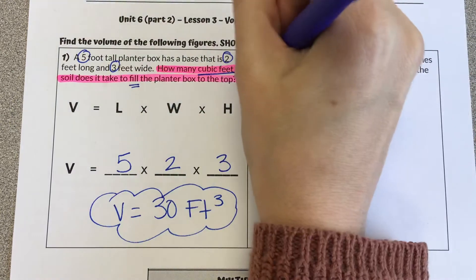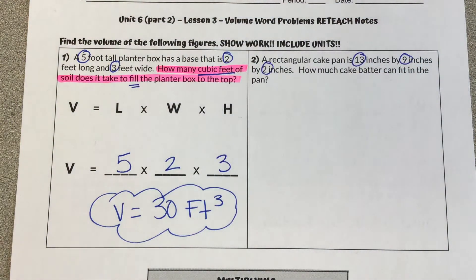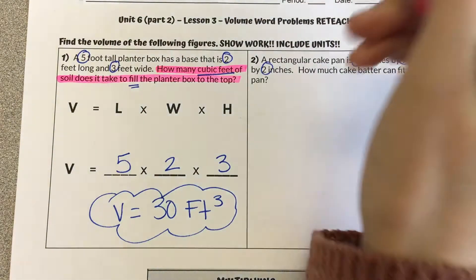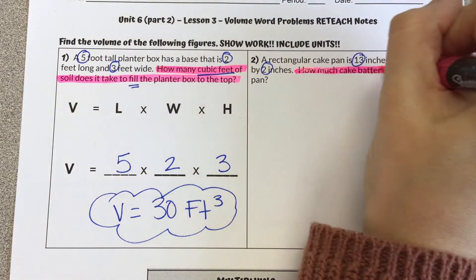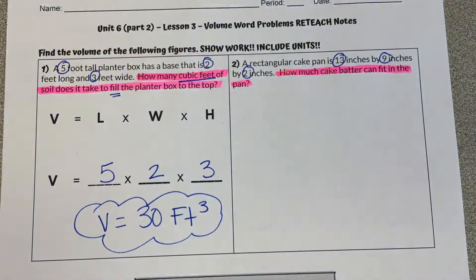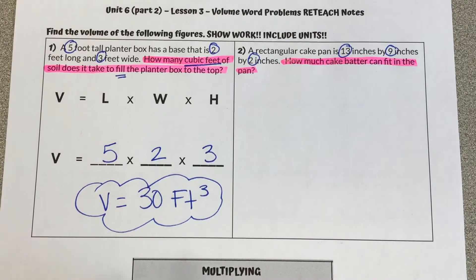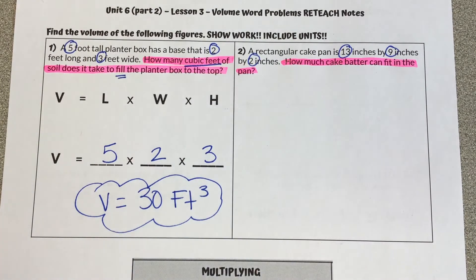Again, first thing, I'm going to circle the numbers given to me in the problem. And then I'm going to look at what the question is asking. It says, how much cake batter can fit in the pan? Just like the first one, it's not explicitly saying that we are finding the volume, but the batter is filling up the pan. It's taking up the space, which is talking about volume.